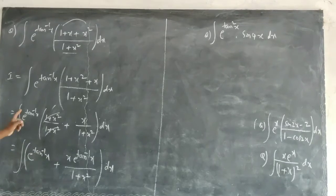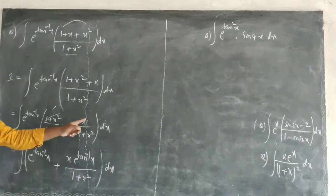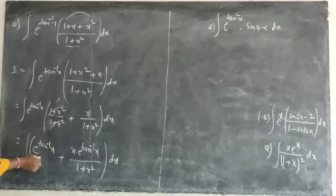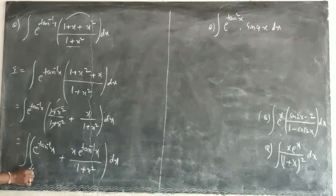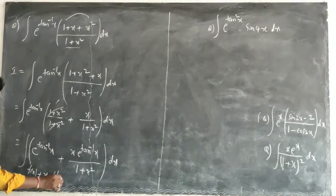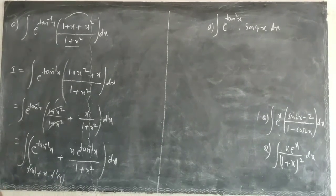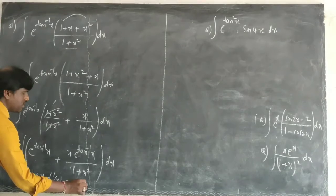When you multiply e^(tan^(-1)x) inside: e^(tan^(-1)x) plus e^(tan^(-1)x) times x/(1+x²). Let us observe this one - this is f(x), this is f'(x). This is f(x) and plus this is x into f'(x). So this is in this format, integration of this value is x·f(x) + c, that's it.